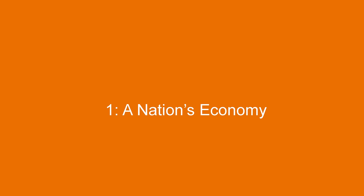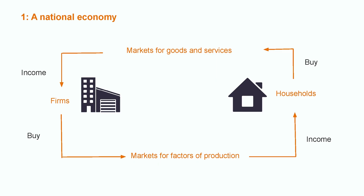First, the national economy. Here is a simplified representation of a national economy. There are two main types of agents: firms and households. There are two main types of markets: markets for goods and services, and markets for factors of production.